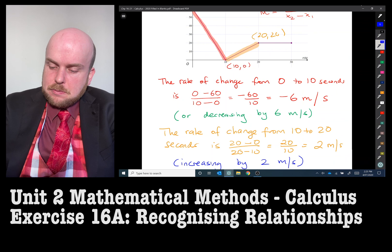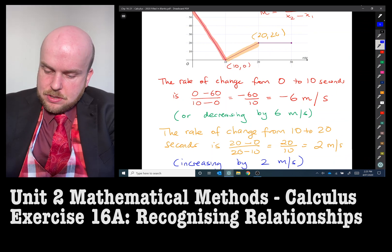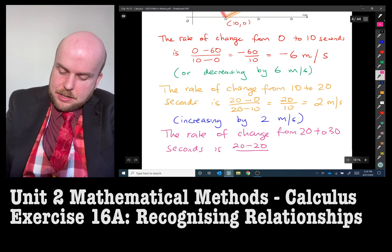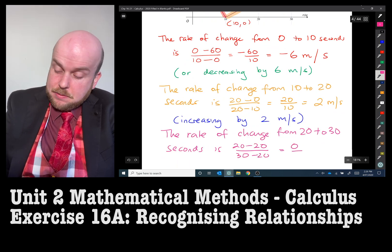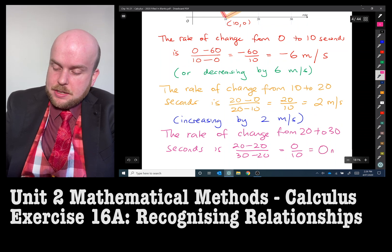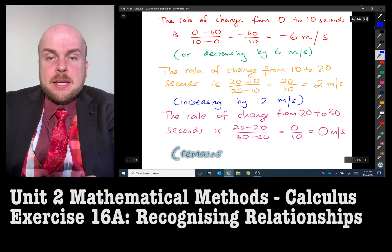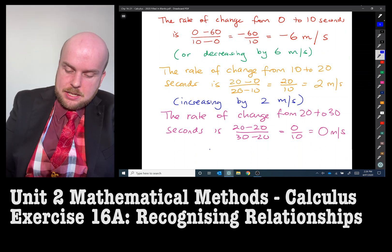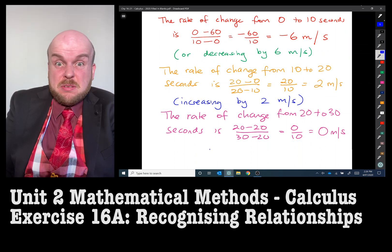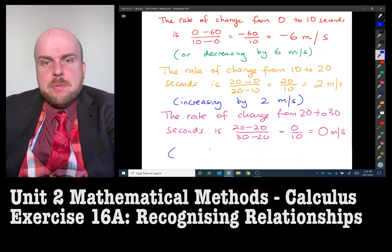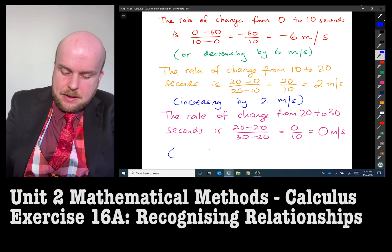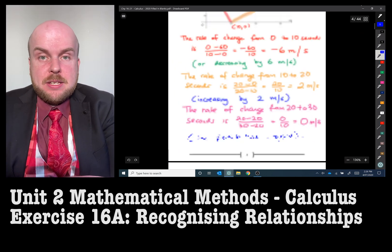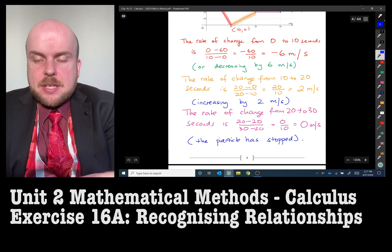And then you'll notice it's flat here. So at (30,20) over 30 take away 20, which is 0 divided by 10, which is 0 meters per second. What does that mean? Well, we can say the particle, if its rate of change is 0 meters per second, then the particle has stopped. So therefore, we have thoroughly described the movement of this particle.